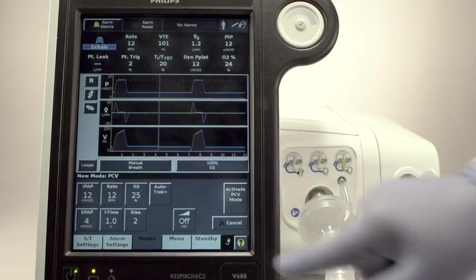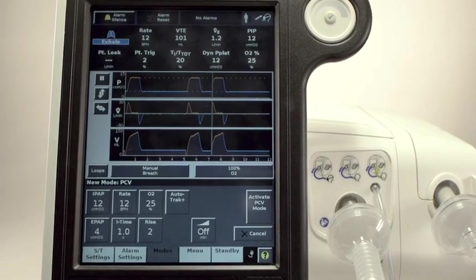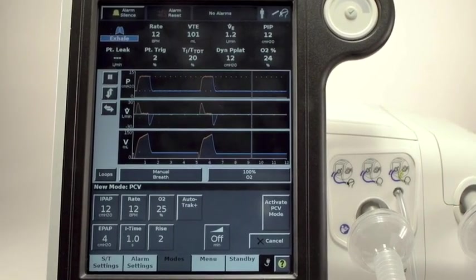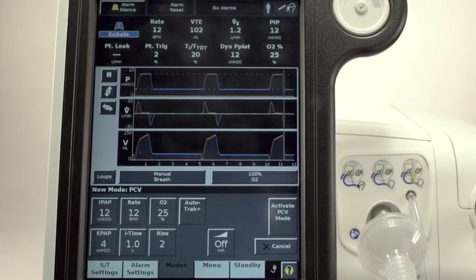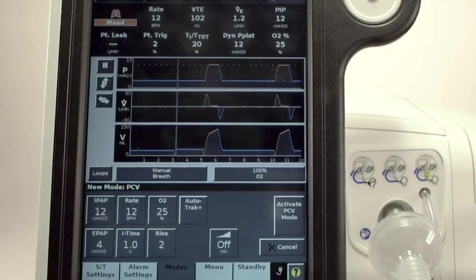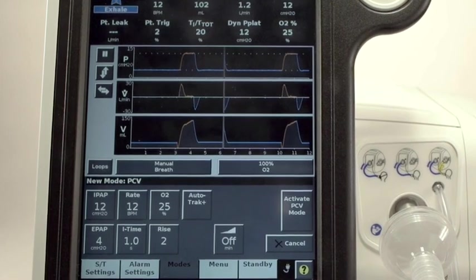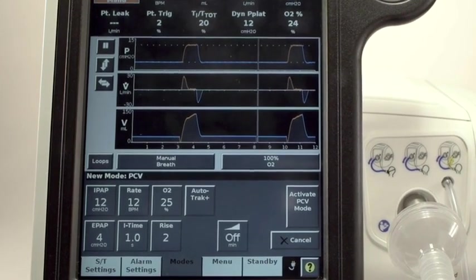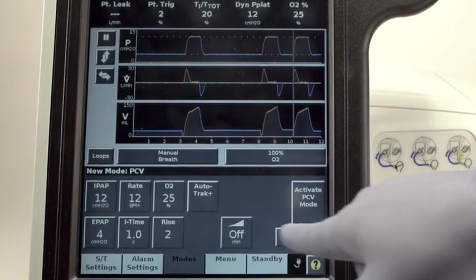In looking at the overall screen, you will notice that whenever possible, settings that are common to more than one mode are placed in the same location. This may give the appearance of empty spaces on some mode screens, but this is all done by design for easy location of the settings. Touch each mode to see an example of this, then touch Cancel to return.